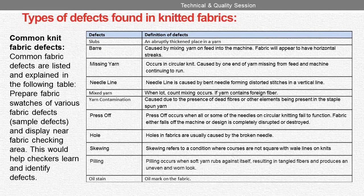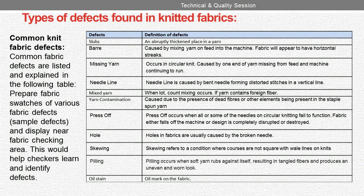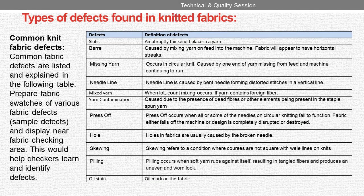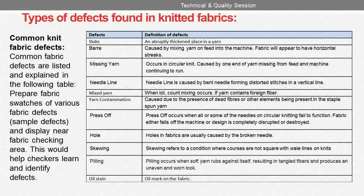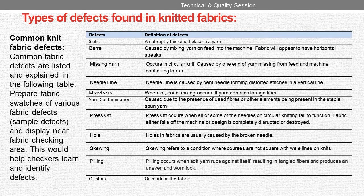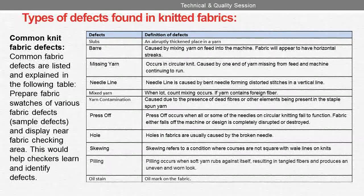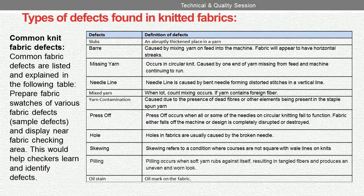When press off occurs, the fabric either falls off the machine or the design is completely disrupted or destroyed. Hole: holes in the fabric are usually caused by a broken needle. Screwing: refers to a condition where courses are not square with wale lines on knits. Pilling: occurs when soft yarn rubs against itself, resulting in tangled fibers and producing an uneven and worn look. Oil stain: oil mark on the fabric.